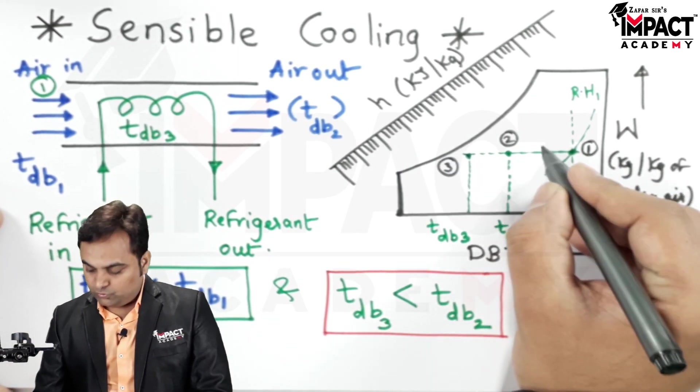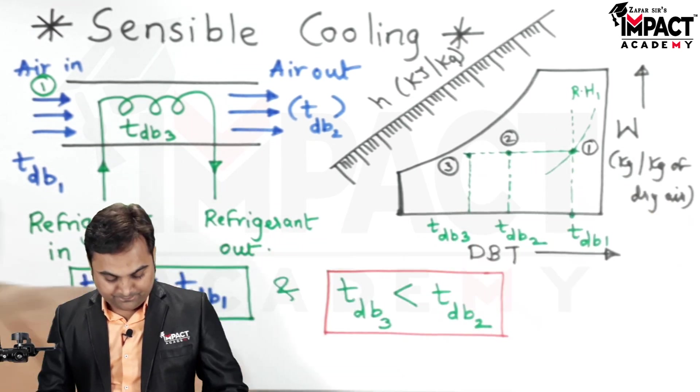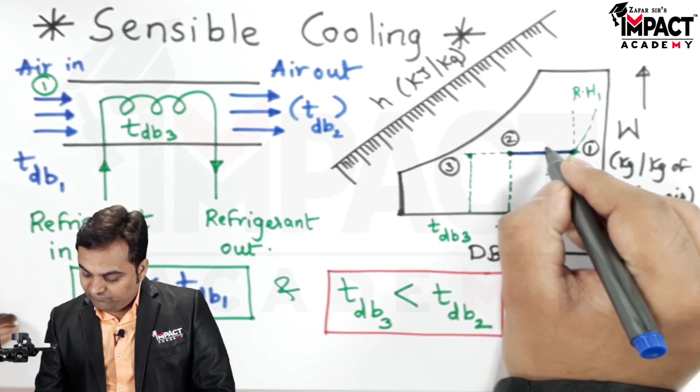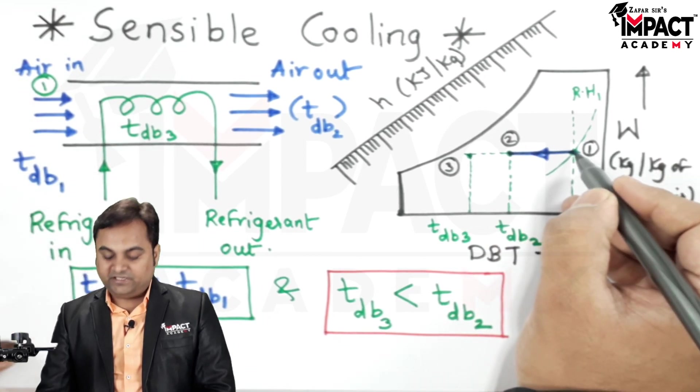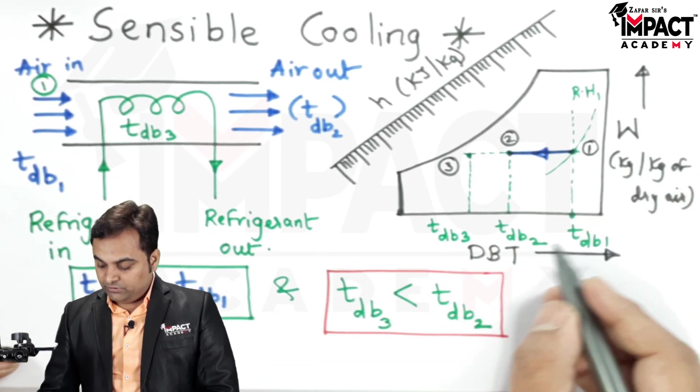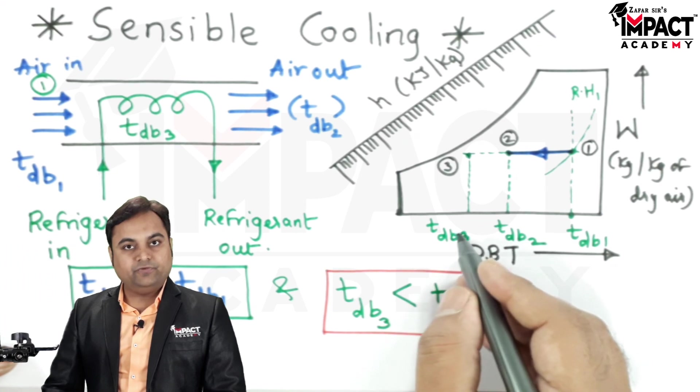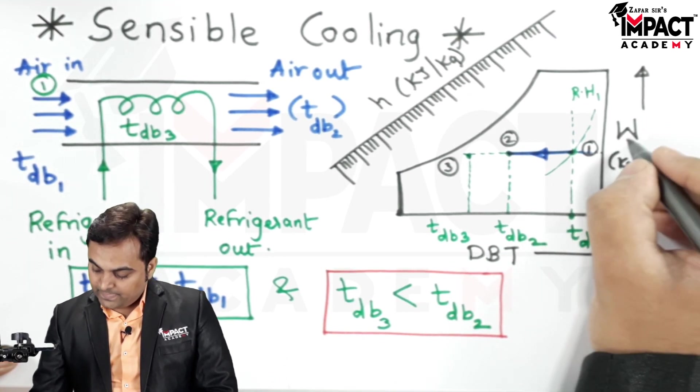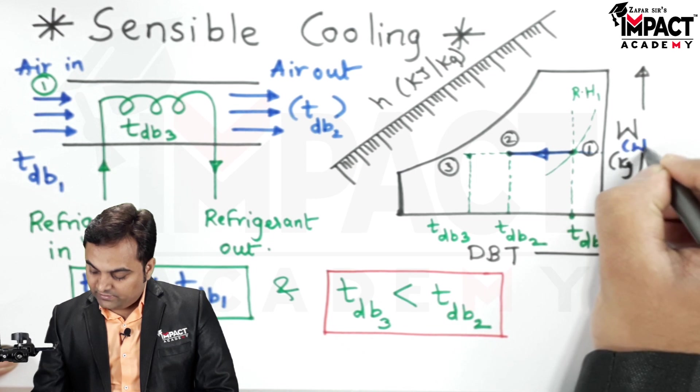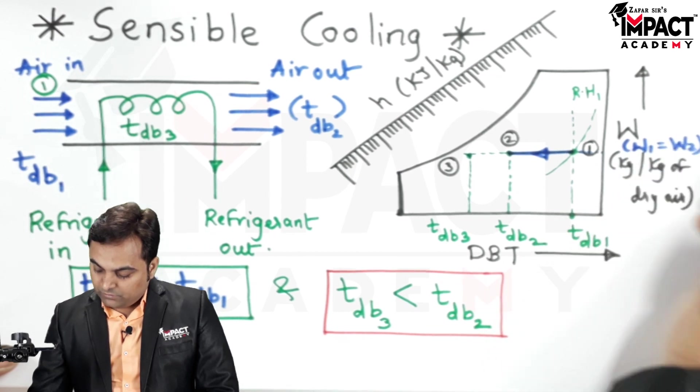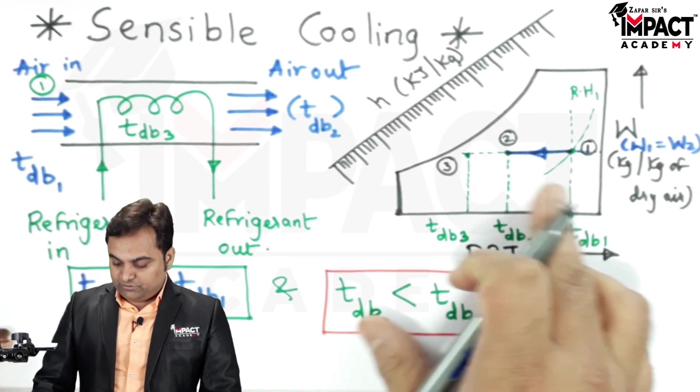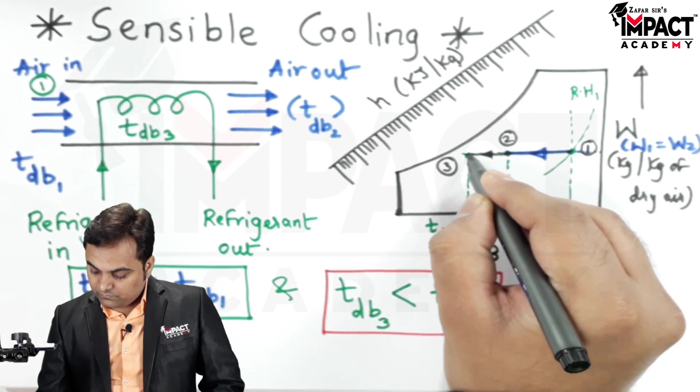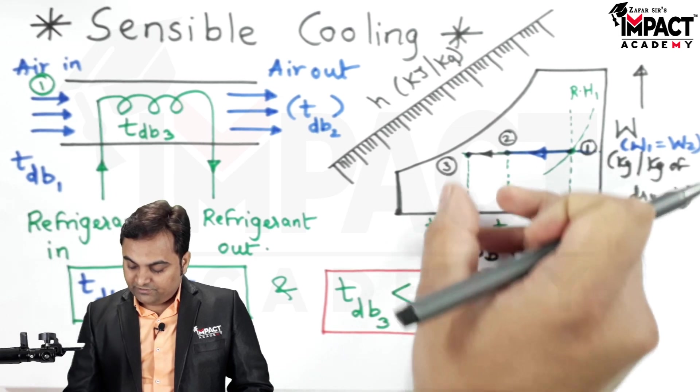So this process 1 to 2, when I join the points 1 and 2, will give me the sensible cooling. That is, starting from point 1 up to point 2 the dry bulb temperature goes on reducing but the specific humidity of the air remains constant. That is w1 is equal to w2. So that is the sensible cooling process, and further when we see here we can get the difference between the cooling coil temperature and the temperature of outgoing air.